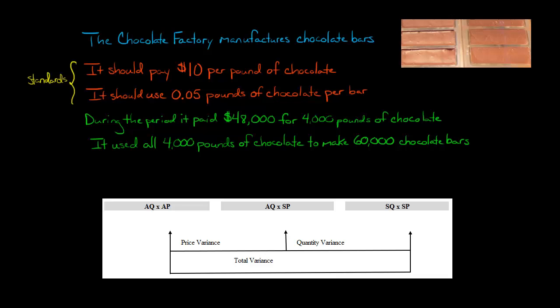So what's our actual quantity here? Well, we bought 4,000 pounds of chocolate. So that's going to be our quantity. We'll put here 4,000. And then what is the price we paid per pound? Well, it actually doesn't tell you that here, but you can figure it out. You just take 48,000 divided by 4,000 pounds. So that's $12 a pound. Or you could just put the 48,000 here. I'm going to put them both so you can see. So this is saying that we bought 4,000 pounds of chocolate at $12 a pound and paid $48,000 total.